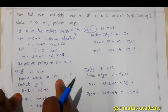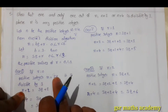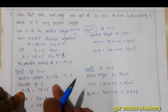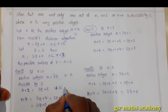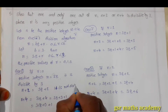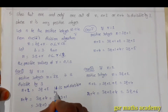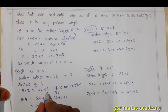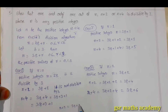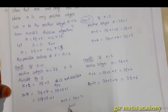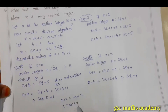In the same manner, if you take n plus 2, then n plus 2 means 3q plus 2, which is not divisible by 3. How do we say that 3q plus 2 is not divisible by 3? Because on dividing n plus 2 by 3, you get quotient q and remainder 2. If you get remainder 2, then n plus 2 is not divisible by 3.